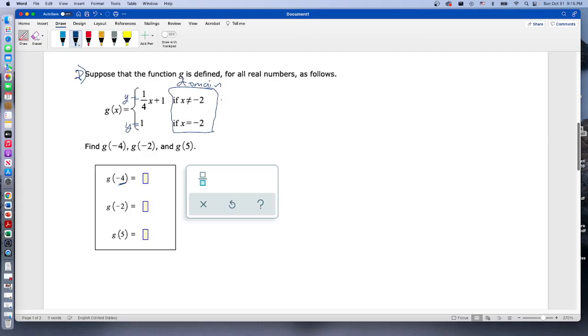It's not equal to negative two, so we're going to use this one here. So g of negative four, we take this function here, one-fourth x plus one, and we plug in negative four right here for the x. So we could think of this as negative four divided by four, which is going to give us negative one plus one, which gives us zero.